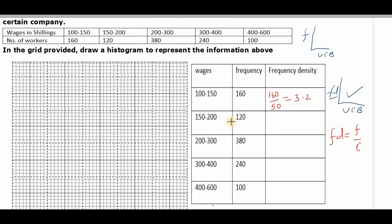Similarly to the next class, we have 120 all over the class interval, which here is again 50. And that should give us 2.4.